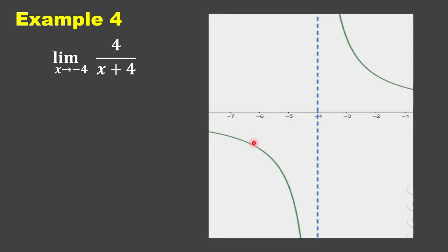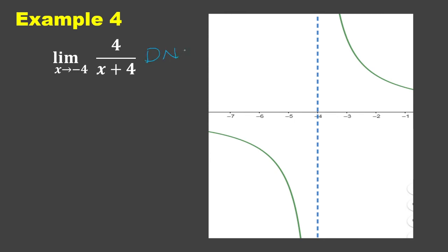Let us check using its graph. We have a vertical asymptote at x equals negative 4. As we move closer to negative 4 from the right, we have positive infinity. And as we move closer from the left of negative 4, f of x decreases without bound — negative infinity. So therefore, this is does not exist.